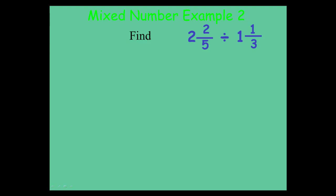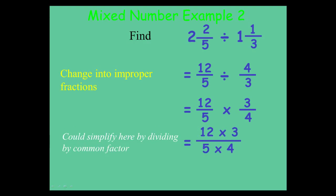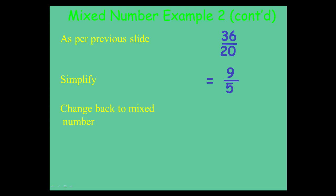Another example: 2 and 2 fifths divided by 1 and a third. Change these to top heavy fractions. You then end up with 12 over 5 times 3 over 4. You end up with 36 on the top, 20 on the bottom. You don't want to leave your answer as a top heavy fraction, so simplify it first by dividing top and bottom by 4. Then 9 divided by 5 gives 1 remainder 4, so your final answer as a mixed number is 1 and 4 fifths.